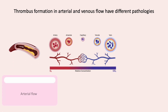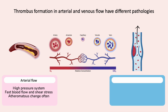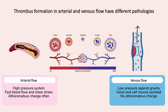The arterial flow is a high-pressure system where blood flow is fast and cells undergo lots of shear stress. Atherosclerotic changes are also a feature only seen in arteries. Venous flow, meanwhile, is slow and sluggish and often has to flow against gravity from the lower extremities. The flow is aided by venous valves and calf muscle contractions, and veins do not exhibit arteriosclerotic changes.